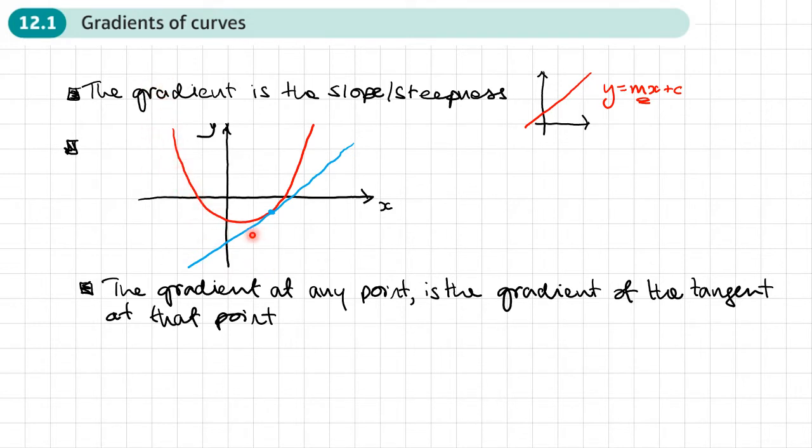You can see at some points of this curve, the gradient is negative because the tangent slopes downwards. Some places it's quite steep, and then it gets less steep. At the bottom here, the gradient would be zero because the tangent would be horizontal.